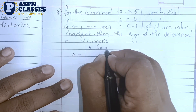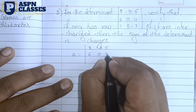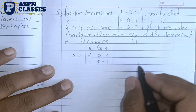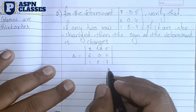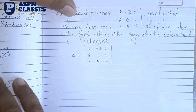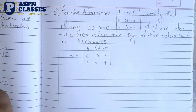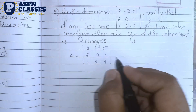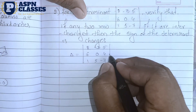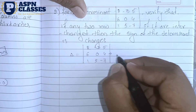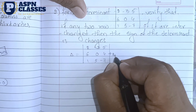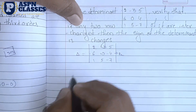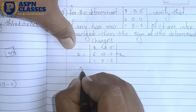So we will work with this determinant: 2, minus 3, 5 / 6, 0, 4 / 1, 5, minus 7. We will work with R1. This is a small example. So if you want to change it, we will expand along R1. Again, I will change R2. The signs are minus, plus, minus. We will calculate the result.